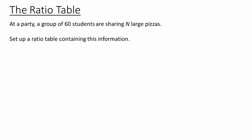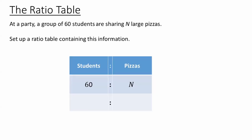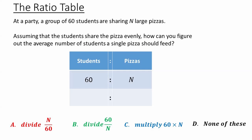Now it's time for you to try the ratio table. At a party, a group of 60 students are sharing n large pizzas. Set up a ratio table containing this information — pause the video now. Next question: assuming the students share the pizza evenly, how can you figure out the average number of students a single pizza should feed? Pause now.